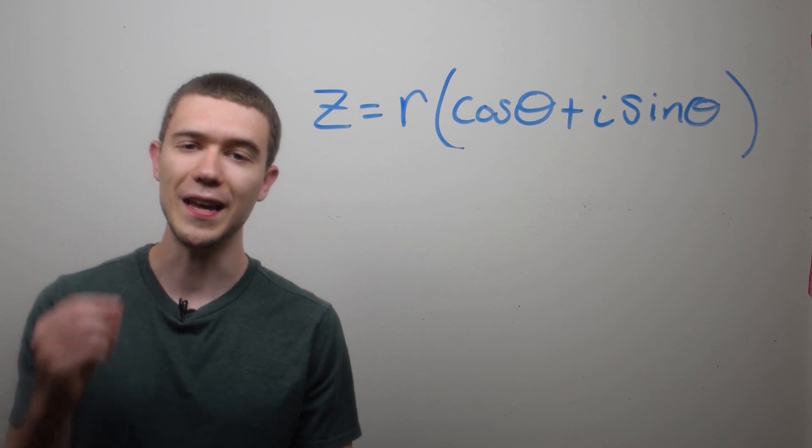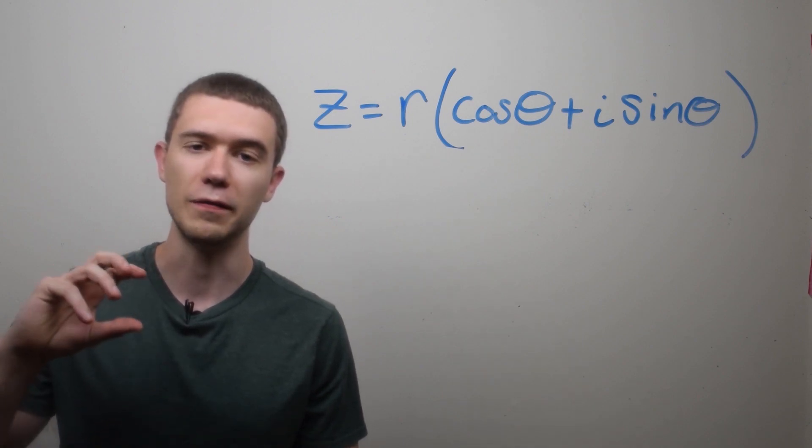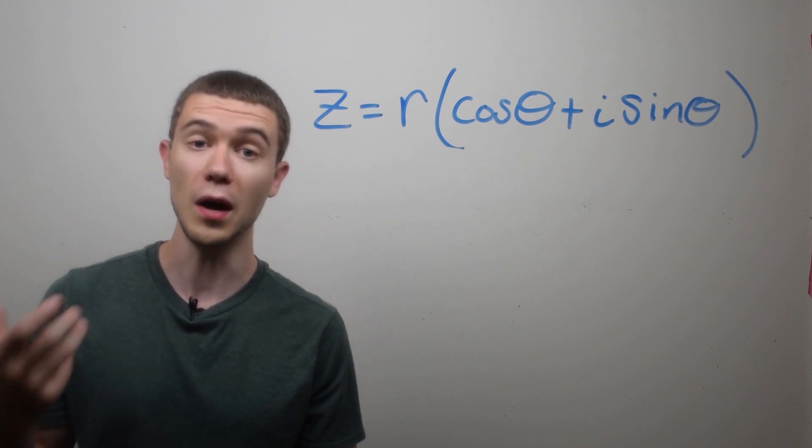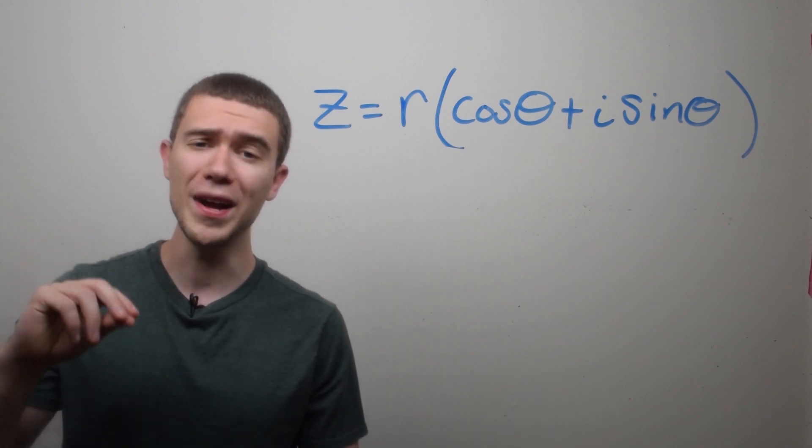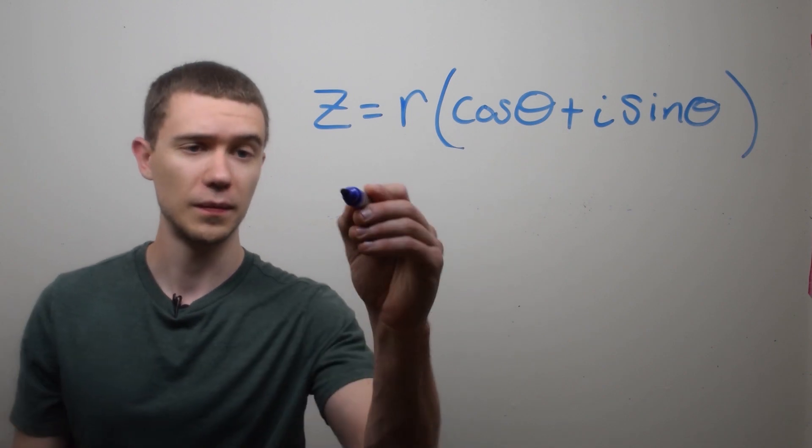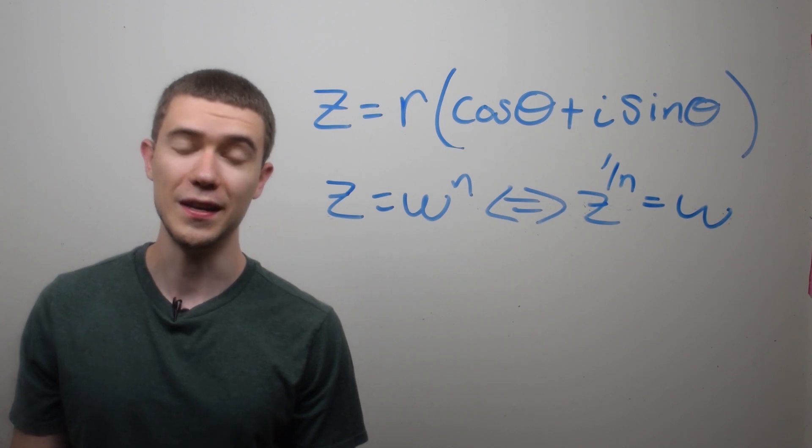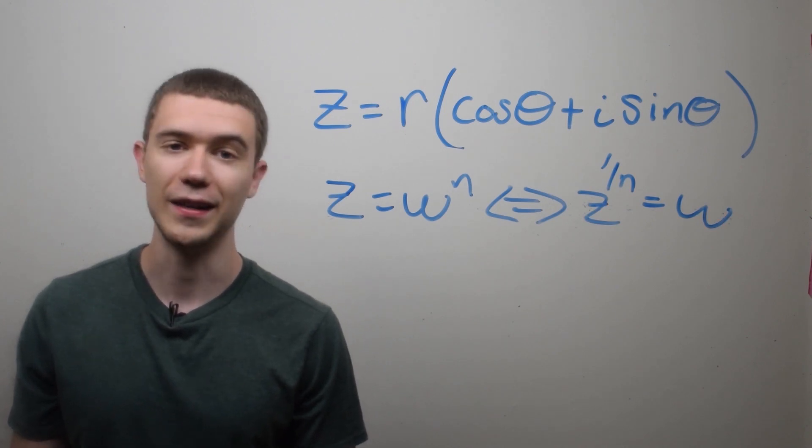Now if I want to take the nth root of this complex number, I'm going to figure it out by defining another complex number w, who if I raise w to the n power, I get z. In other words, the nth root of z is given by w, meaning if I raise w to the power n, I get back z.